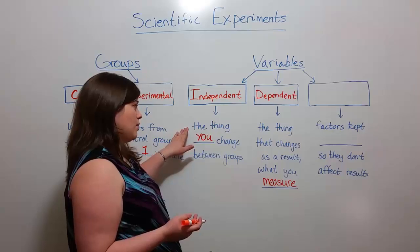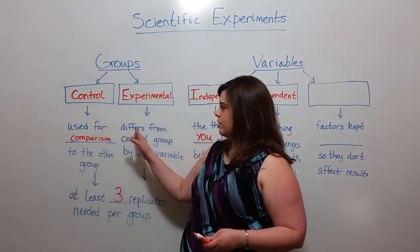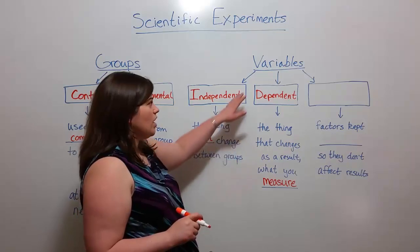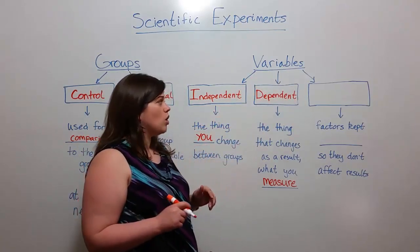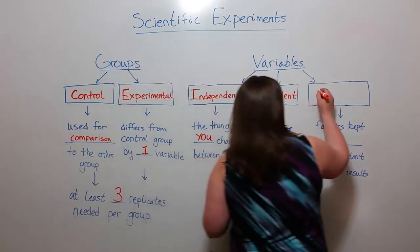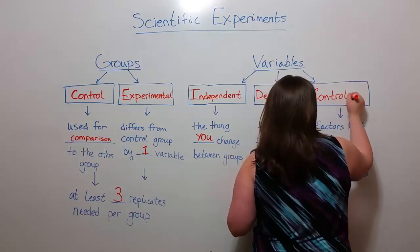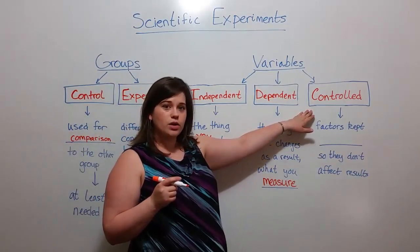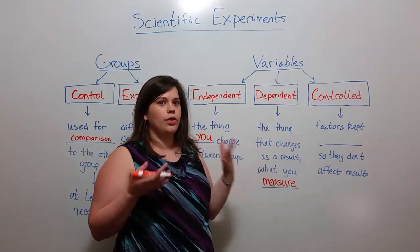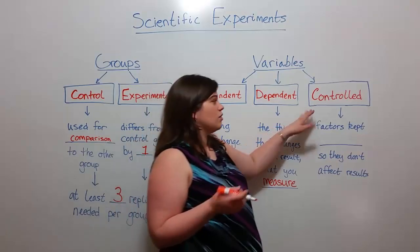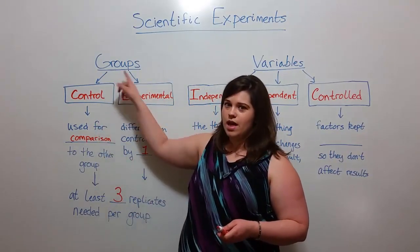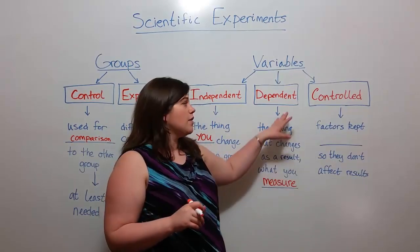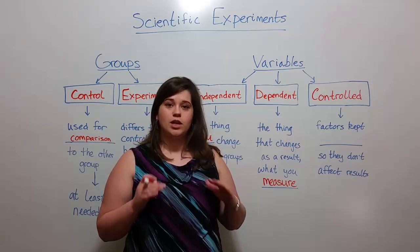Remember that the independent variable is what is differing between the groups, and there should be only one of those when you've got these two groups. The third type of variable to keep in mind is called the controlled variable. There are a few different names for this: the controlled variable, the control variable, or sometimes just called the controls. This can be a little confusing when you are also talking about a control group, which is why it's good to always distinguish whether you're talking about the control group or the control variables. The control variables are factors that are kept constant.